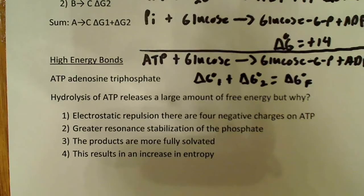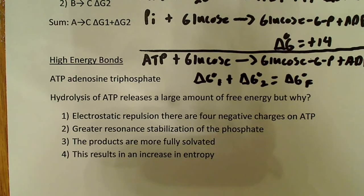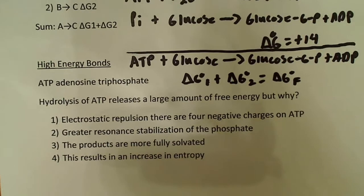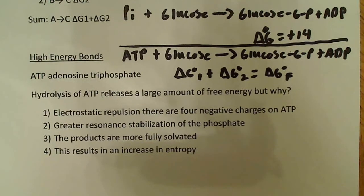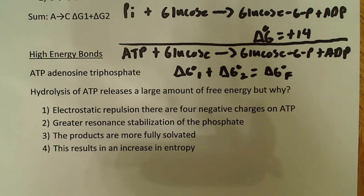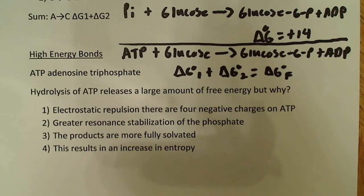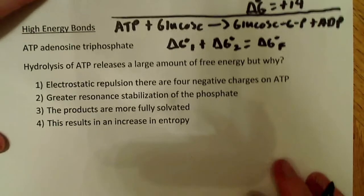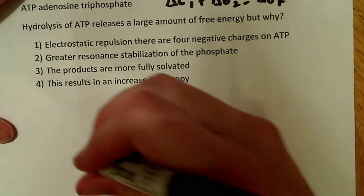The next thing I want to talk about briefly is high-energy bonds. They might ask you on an exam to explain why ATP releases a lot of free energy when it's hydrolyzed. ATP is adenosine triphosphate. Hydrolysis of ATP releases a large amount of free energy, but the question is why — what makes ATP a useful energy-producing molecule?